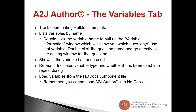The next tab down the list is the variables tab. In the variables tab you can track the coordinating Hot Docs template. It lists variables by name. If you double-click on the variable name it will bring up a variable information window which will show you specifically which questions that variable is being used in. Double-clicking then on the question name will take you directly into the question editing window. This tab can also show if variables have been used or are not used. It will tell you if a variable is a repeat variable. That's more of an advanced topic. We'll talk about repeat dialogues in the future. And it allows you from here to load those variables from your Hot Docs component file. Remember again you cannot load A2J Author variables into Hot Docs. You can only load Hot Docs variables into A2J Author.